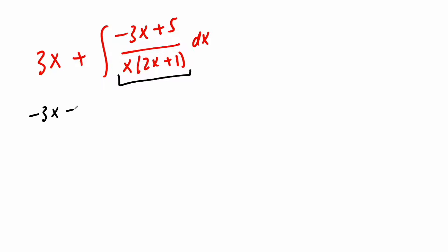So I have negative 3x plus 5, divided by, we have x, parentheses, 2x plus 1, close it, is equal to. I'm going to say a divided by x plus b divided by 2x plus 1.